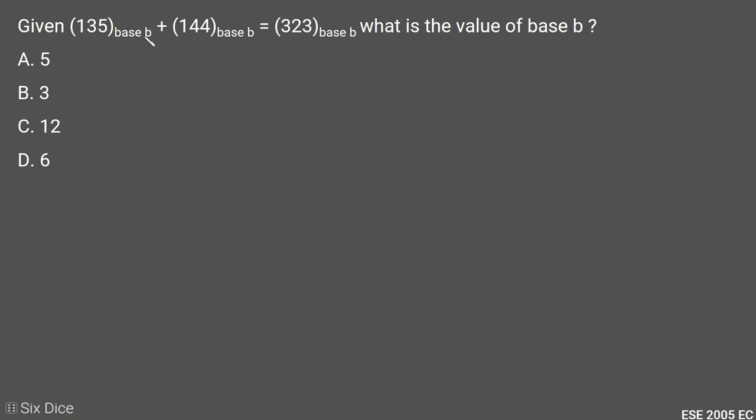In this question we need to find the unknown base value b. Here they give us an addition equation where a base b number is added to another base b number to get a third base b number. The first approach for this question will be observation-based.